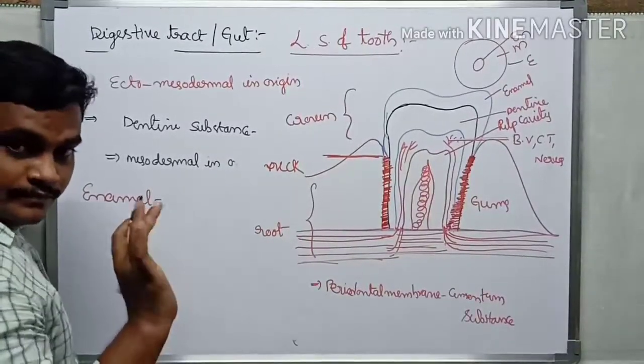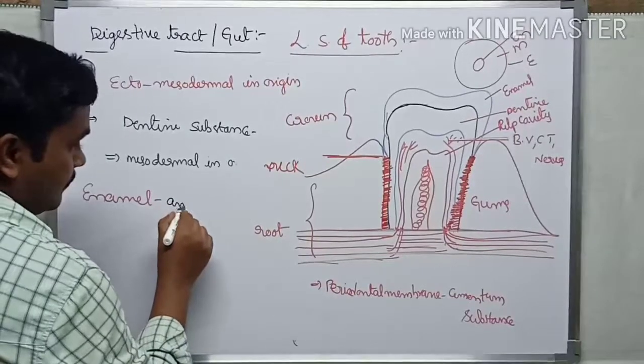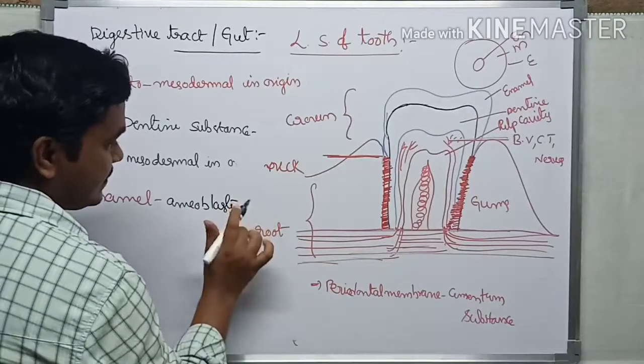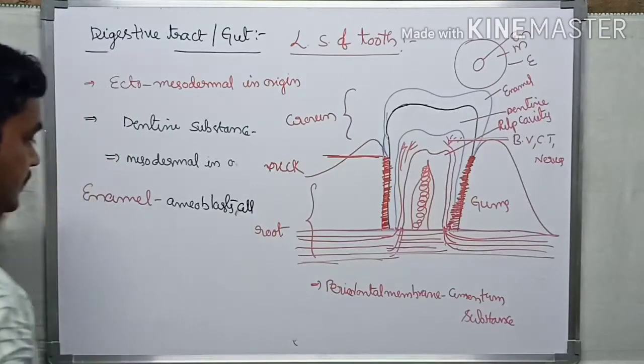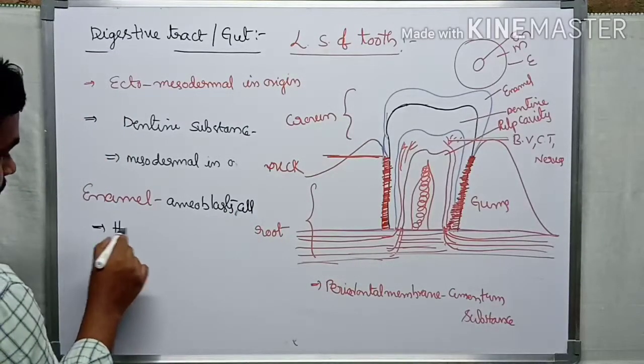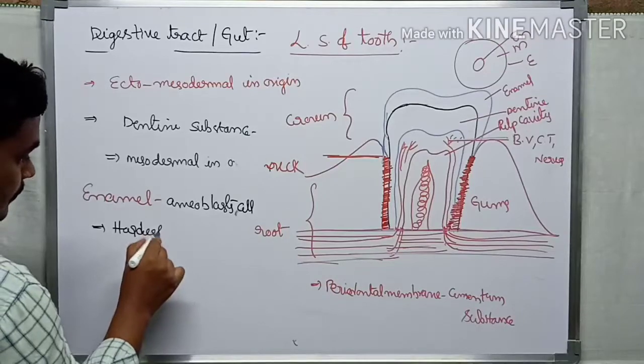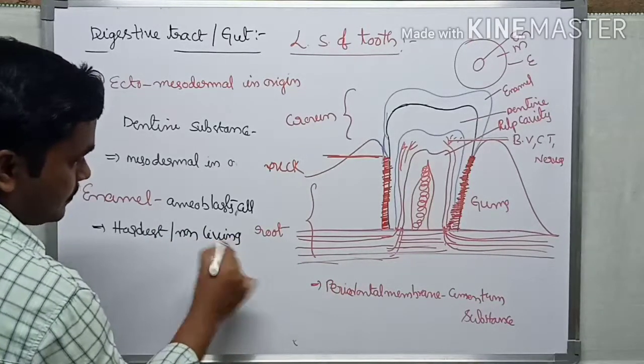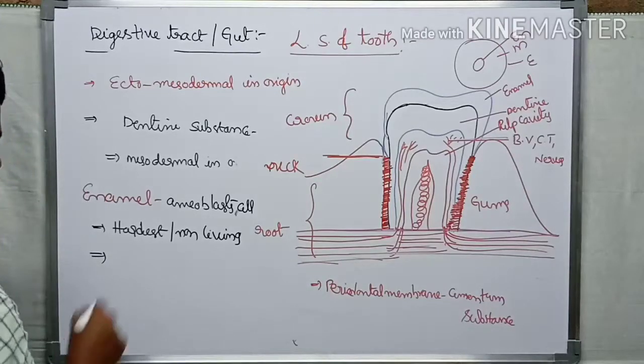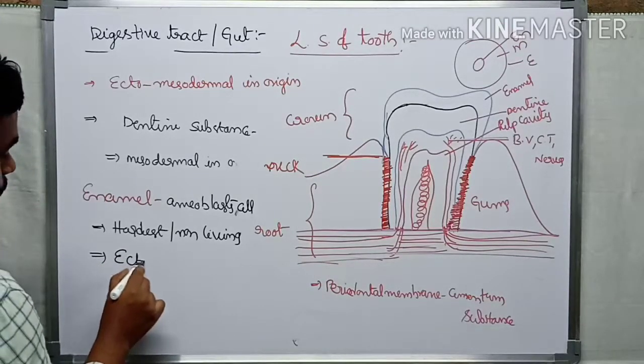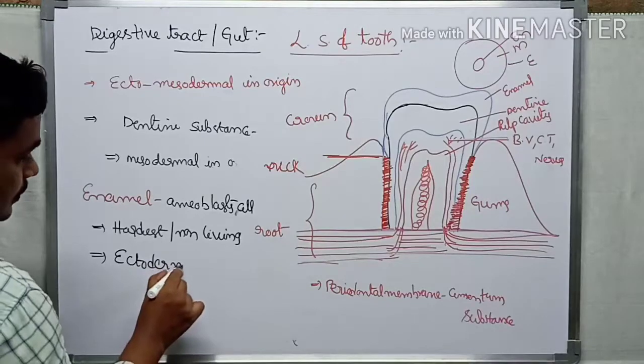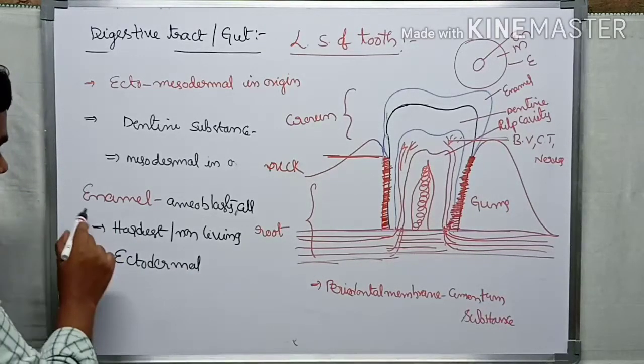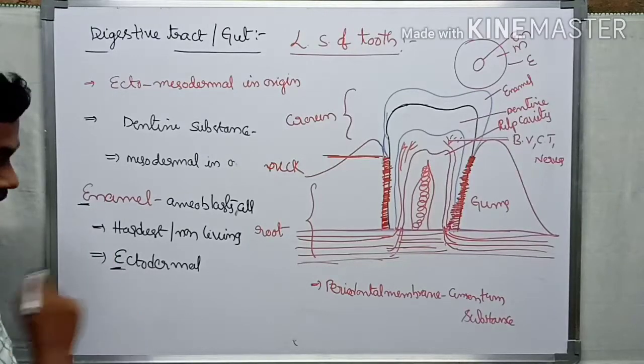Enamel is secreted by ameloblasts, which are ameloblast cells, and it's the hardest non-living substance. This is derived from the ectodermal layer - ectodermal in origin, so E for ectodermal, E for enamel.